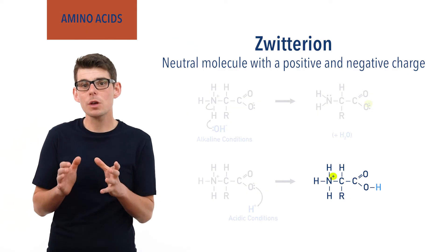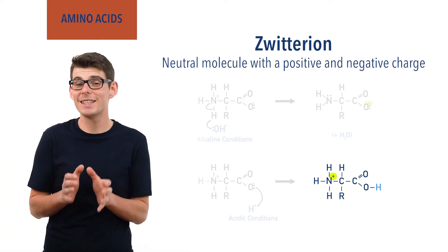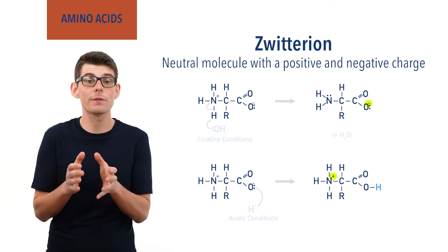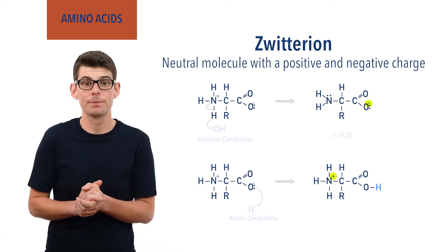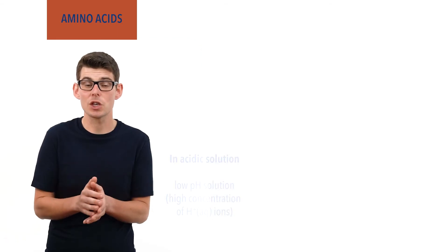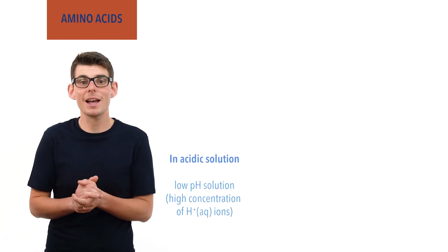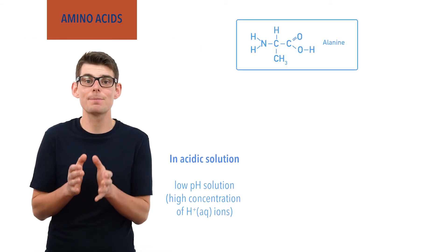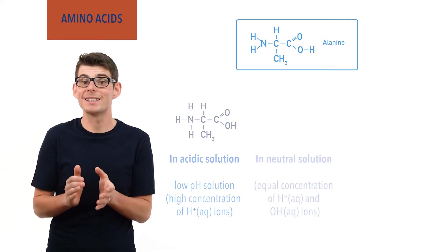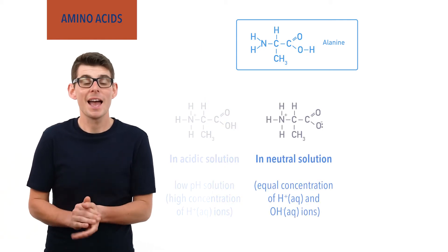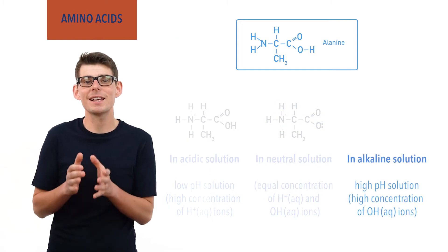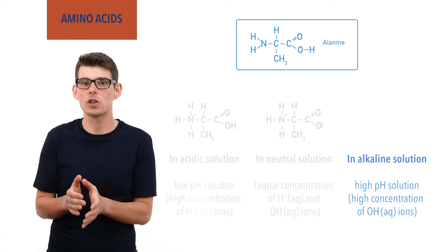This shows us that amino acids can exist in three forms, all depending on the pH of the solution they are in. For example, in an acidic solution with a low pH the amino acid alanine exists as a positively charged ion; in a neutral solution it exists as a zwitterion; and in an alkaline solution with a high pH it exists as a negatively charged ion.